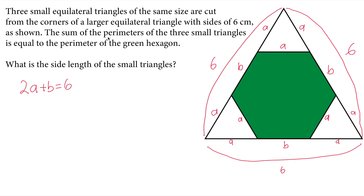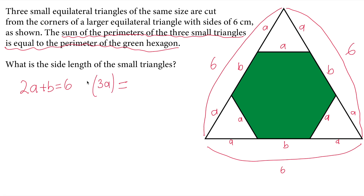And we have another piece of information: the sum of the perimeters of the three small triangles is equal to the perimeter of the hexagon. So I will set up another equality. One triangle's perimeter is 3A, and I have three of them, giving 9A. The perimeter of the green hexagon has 3 B-sides and 3 A-sides, giving 3A plus 3B.